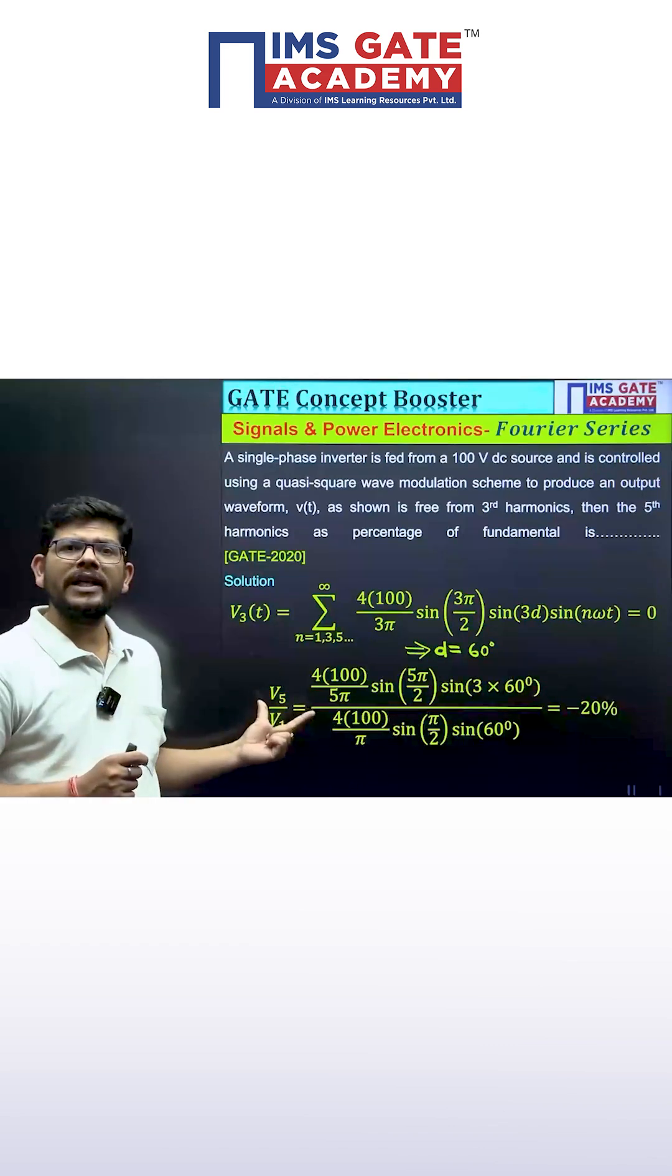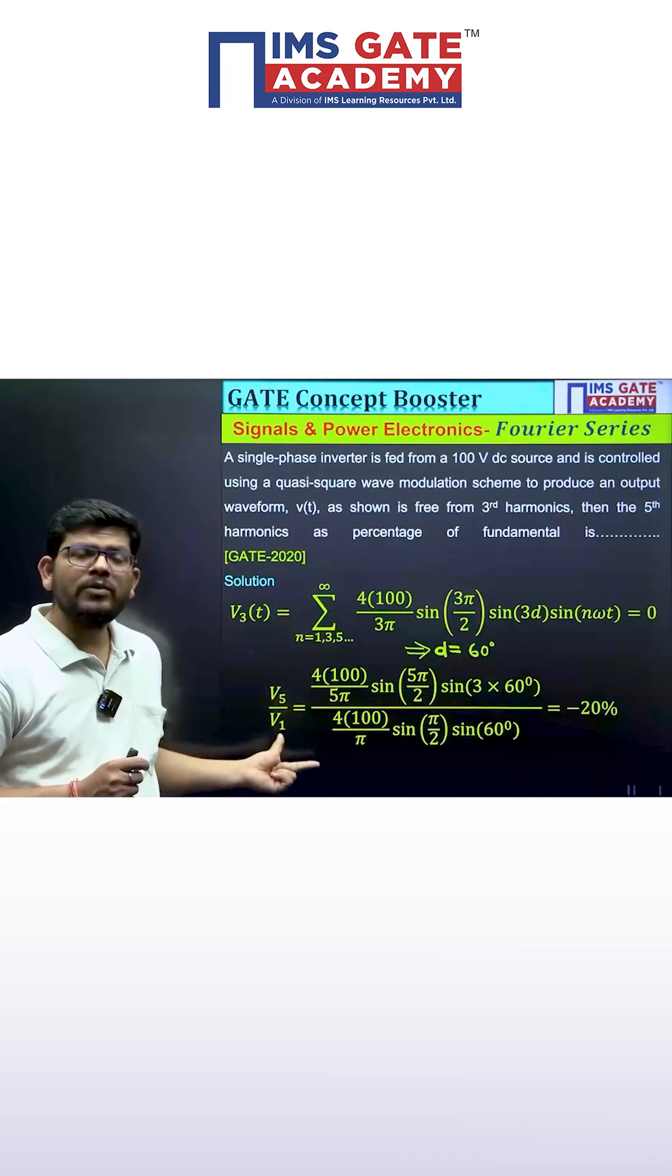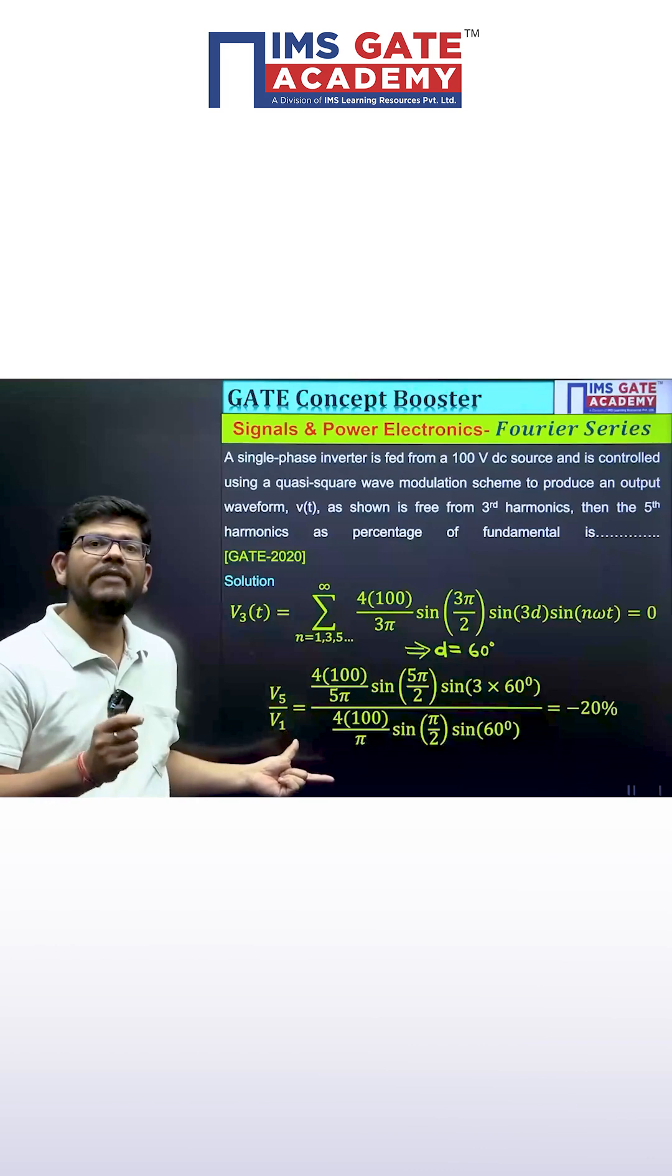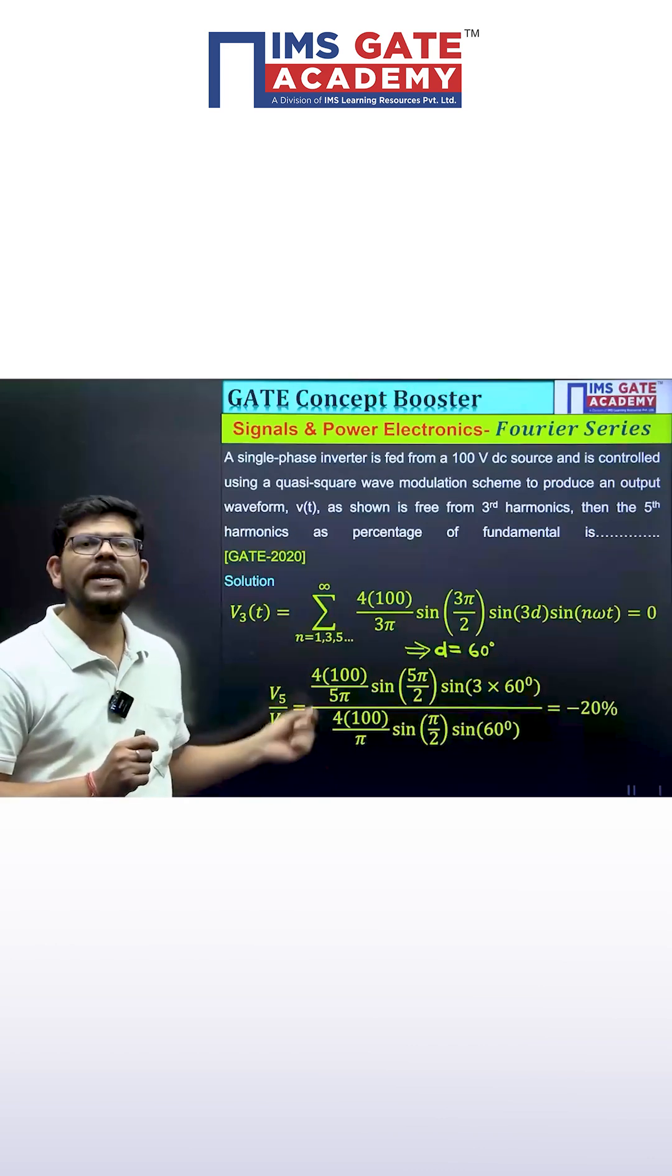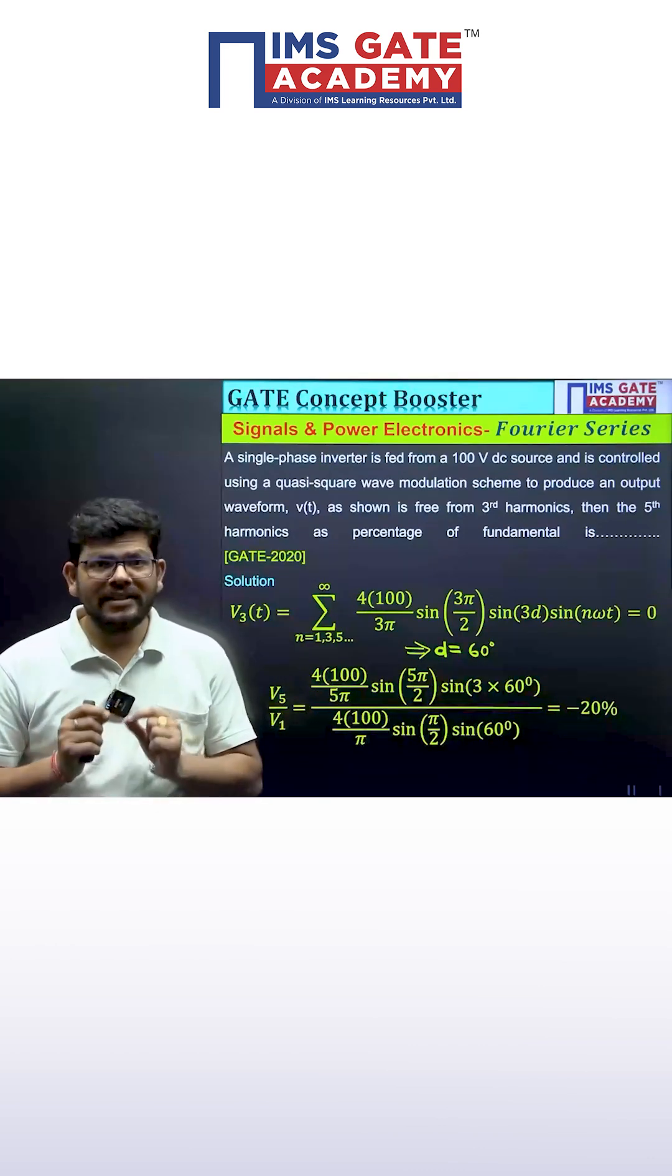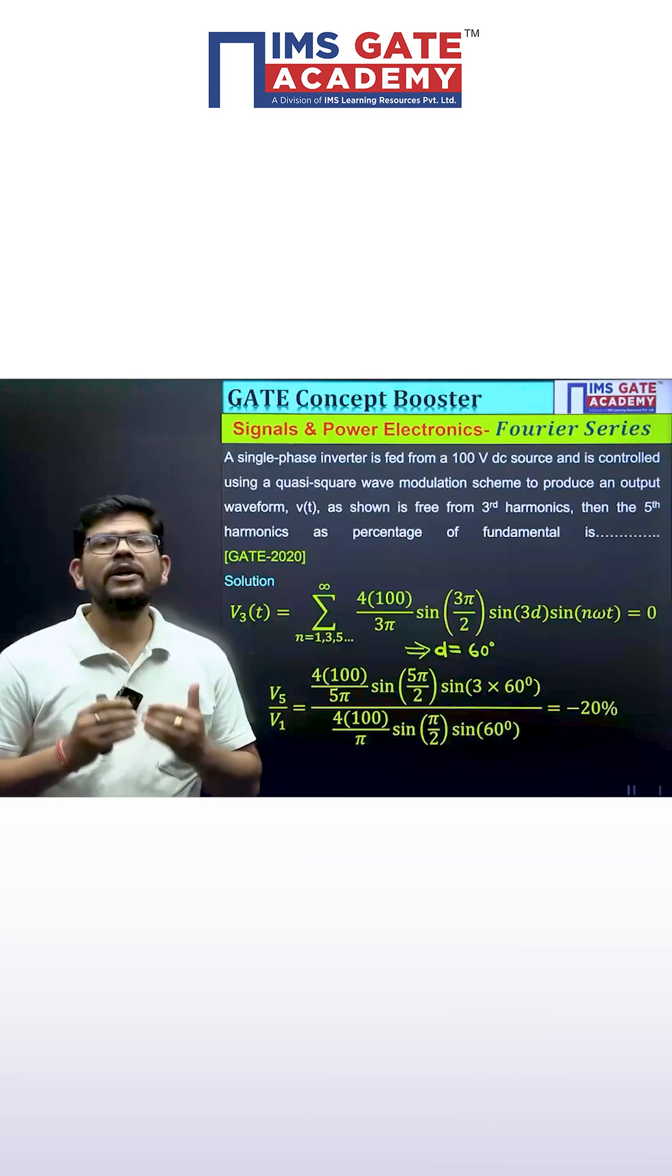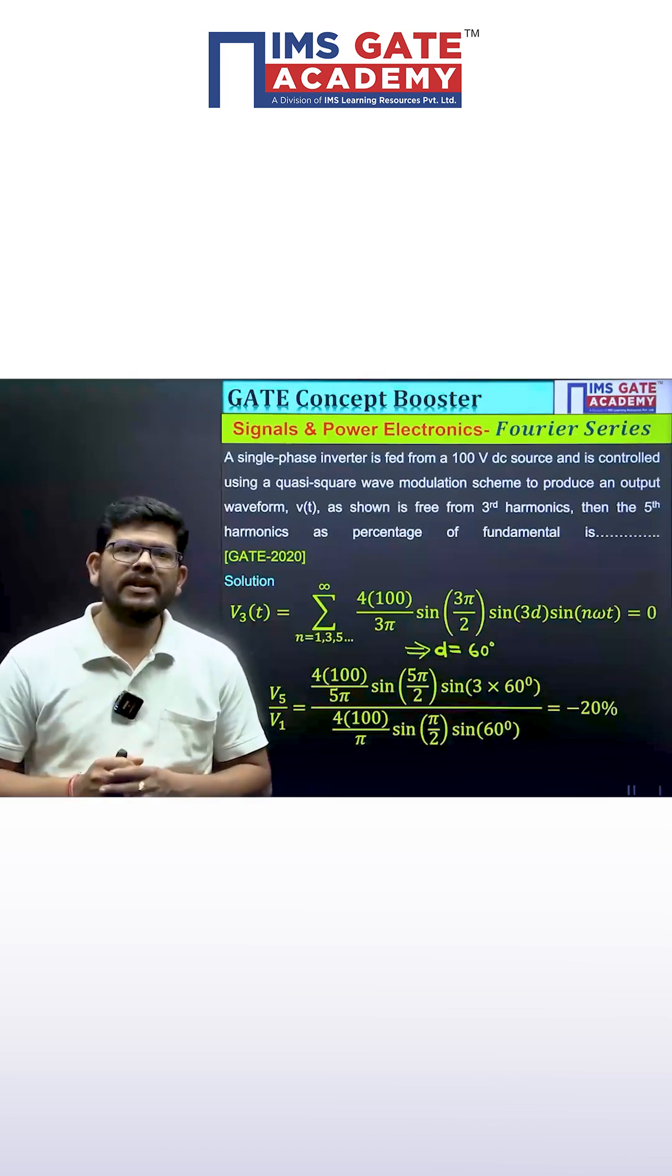Now you can calculate the ratio of fifth harmonic with respect to fundamental harmonic by putting the n value five and one in the same expression and putting the value of d as 60 and calculating the ratio. You will get minus 20 percent as answer.